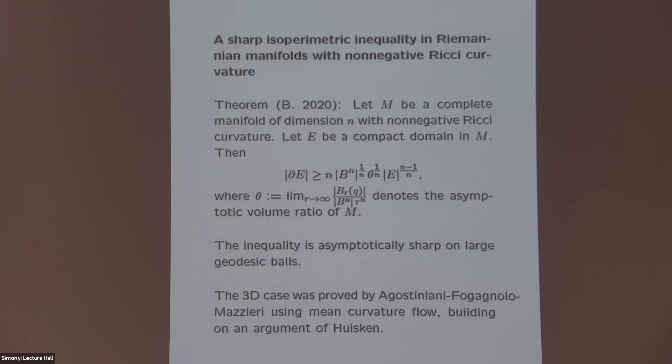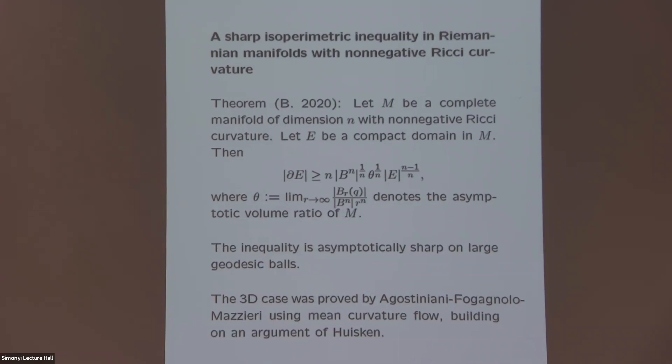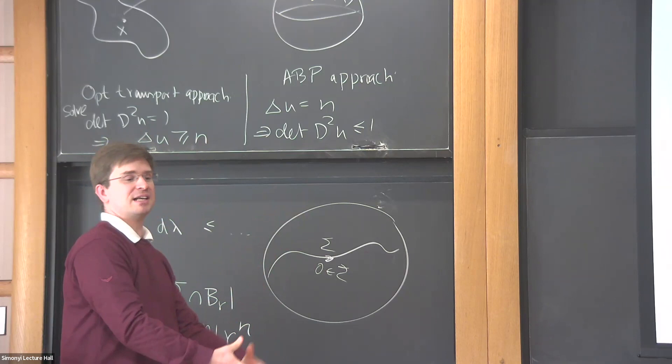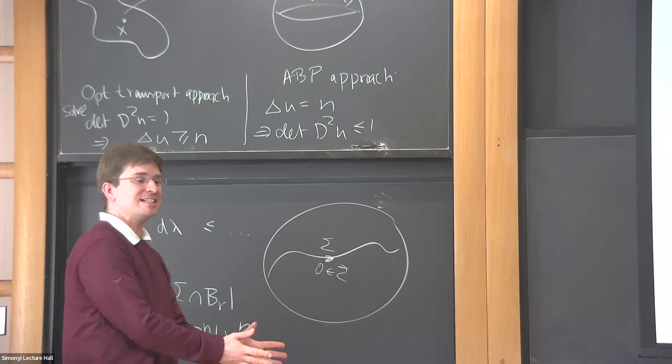Questions? In this Riemannian case, do you want not too much curvature? If there is too much curvature, you would get nothing, because if you take any balls... That's right. If the asymptotic volume ratio could be zero — like if you are on a paraboloid, the volume growth is zero. So it gives non-trivial information for manifolds asymptotic to cones, but if you have too much curvature and it doesn't open up enough, you get no information whatsoever.